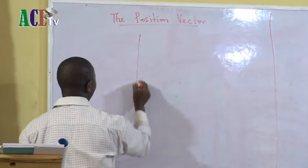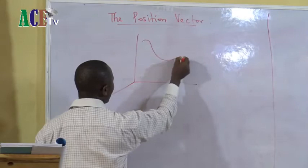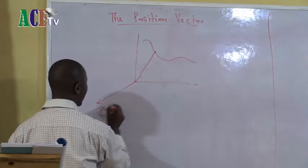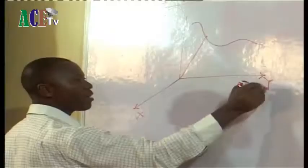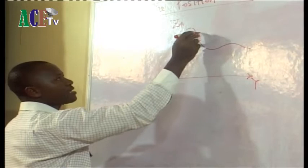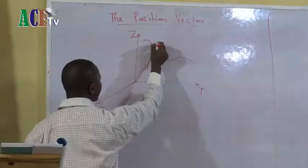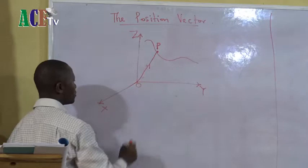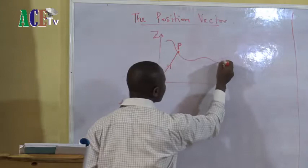A position vector — for us to define a position vector, we need to understand diagrammatically what we mean. We would be looking at a three-dimensional plane. We assume that there is a curve in motion, and on the curve here we have a particle. This is our x-axis, our y-axis, and our z-axis. This position is called P — there is a mass here called P — and this is the origin. This is the curve, the path of motion, C.